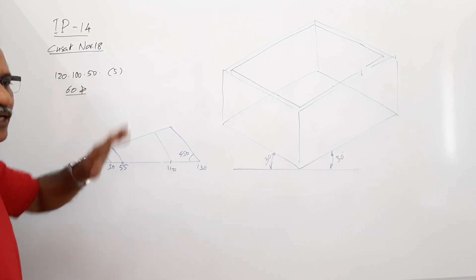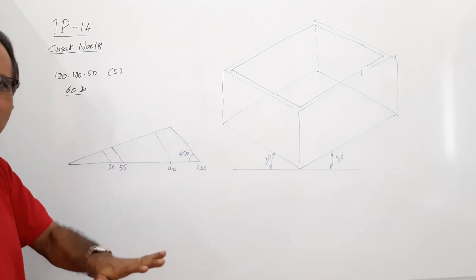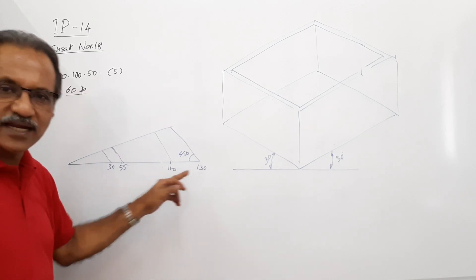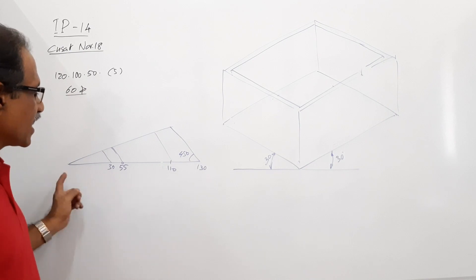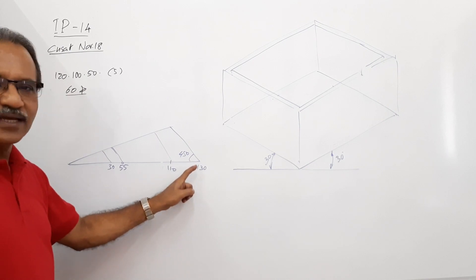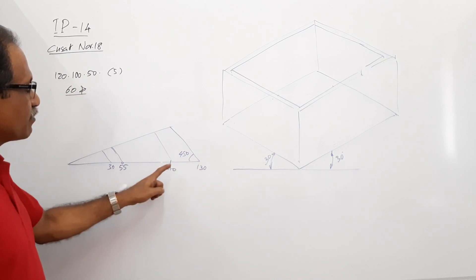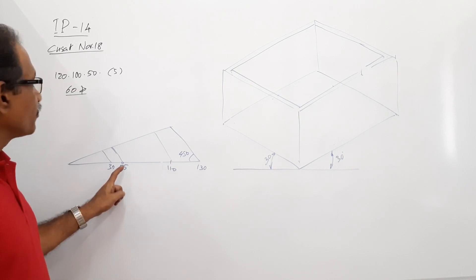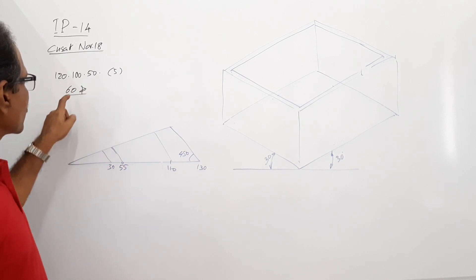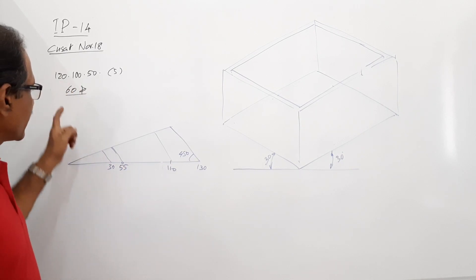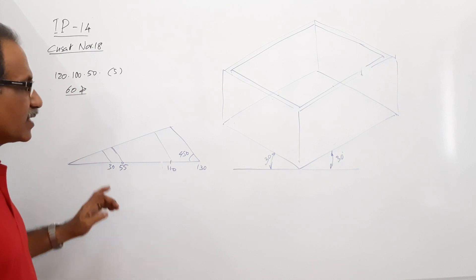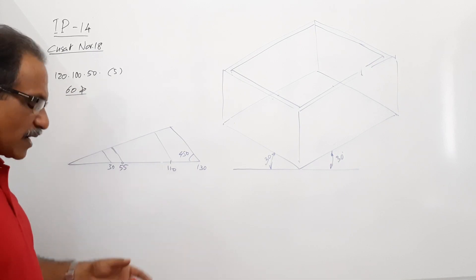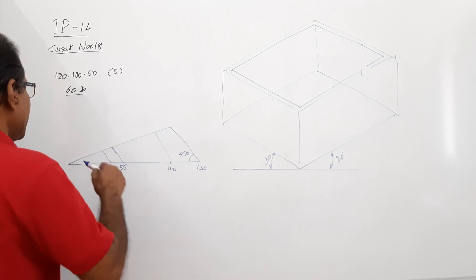I draw an isometric sketch. The maximum length is 130, out of which I mark 110 and 55. I also mark 30, which is the half-radius of the wall. We mark this much; if we need more, we will mark later. The isometric axes are at 15 degrees and 30 degrees.